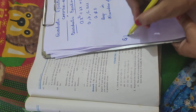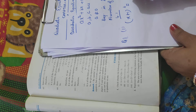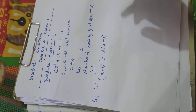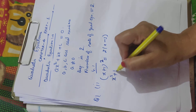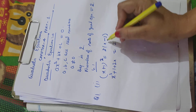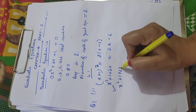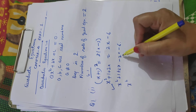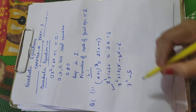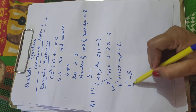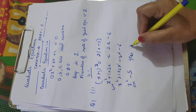For example, Part 1 of Exercise 4.1: x plus 1 whole squared equals 2 into x minus 3. Expanding using the identity (a+b)² = a²+2ab+b², we get x squared plus 2x plus 1 equals 2x minus 6. Bringing everything to one side: x squared plus 2x minus 2x plus 1 plus 6 equals 0, which simplifies to x squared minus 5 equals 0. The highest degree is 2, therefore it is a quadratic equation.